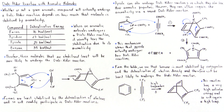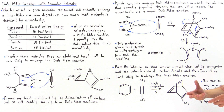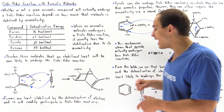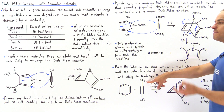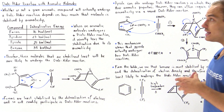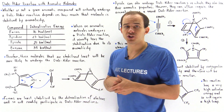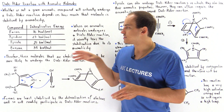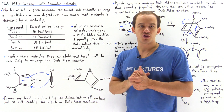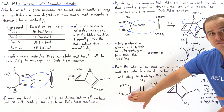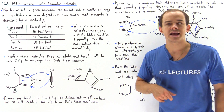Benzene will only undergo the Diels-Alder reaction if the dienophile is very active and conditions are at very high temperature — only then will there be enough energy to overcome the relatively high activation barrier and form a relatively unstable product. This product is not very stable because at the bridgehead position there is a double bond, creating steric hindrance. So this reaction has a very high activation energy and requires a very active dienophile, confirming that benzene is the least likely of these aromatic compounds to undergo the Diels-Alder reaction.